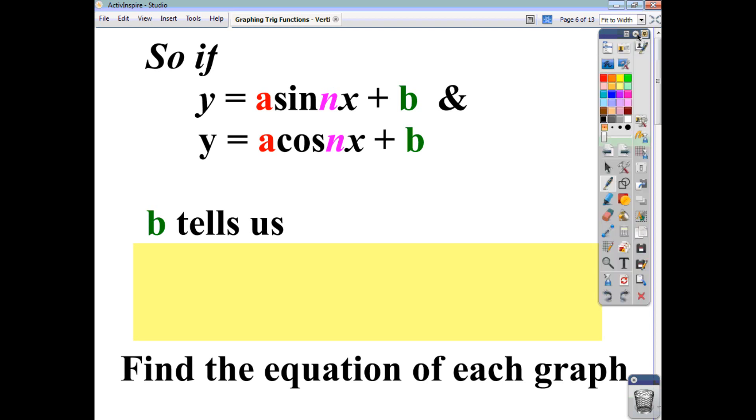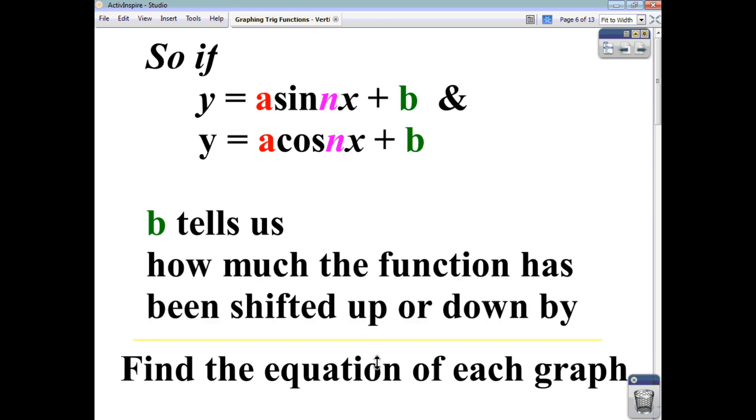So this constant at the end here has the effect of shifting the whole function up or down. It tells us how much it has been shifted up or down by. So it can be thought of as determining the vertical shift of your function.